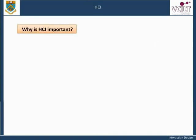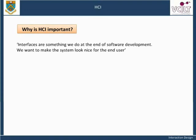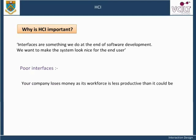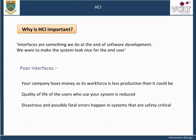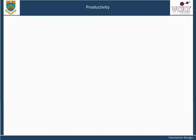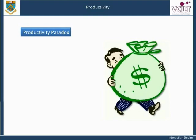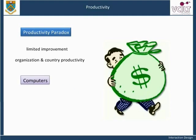Why is HCI important? Interfaces are often something added at the end of software development just to make the system look nice for the end user. However, experience has shown that badly designed interfaces can lead to serious implications — your company may lose money as its workforce is less productive, the quality of life of users is reduced. There has been a lot of interest in the phenomenon known as the productivity paradox: why, when so much money has been spent on computer systems, has there been such limited improvement in organizational and country productivity? The common belief is that computers can make a business more efficient and effective, but there has been little economic data to back this up.